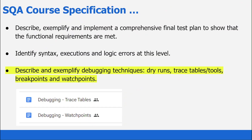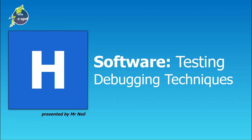So in this video we have looked at a range of dry runs using trace tables and watchpoints. Hopefully you're now more confident in this aspect of the Higher Computing Science course.